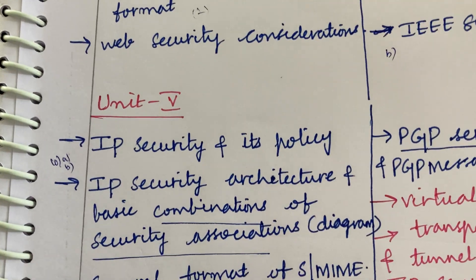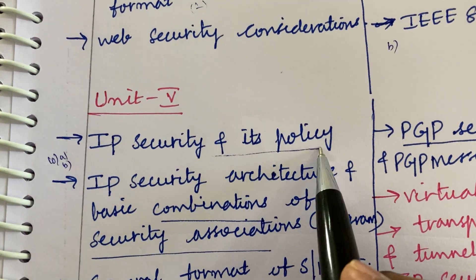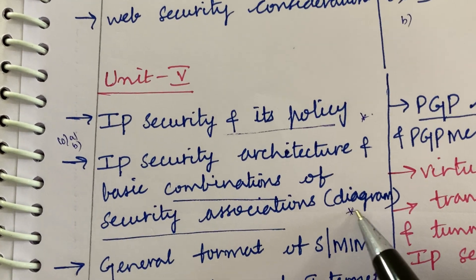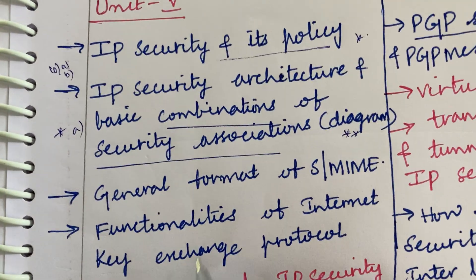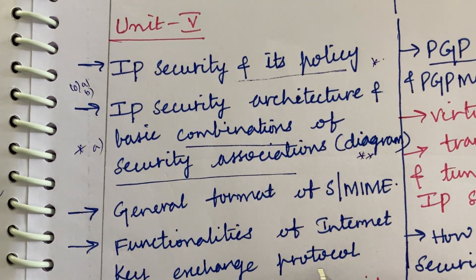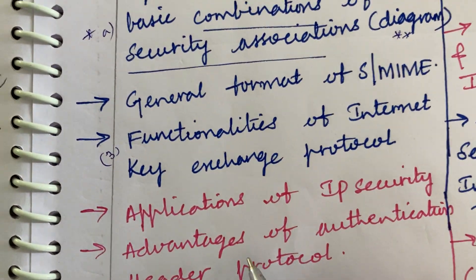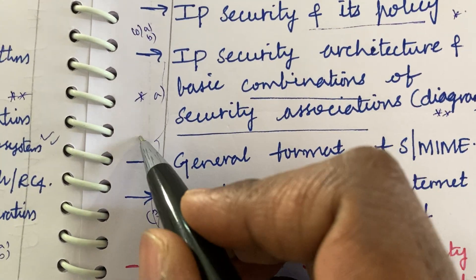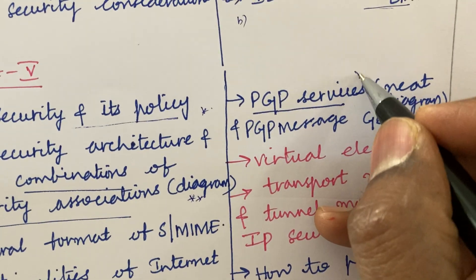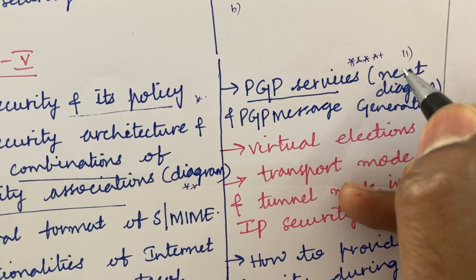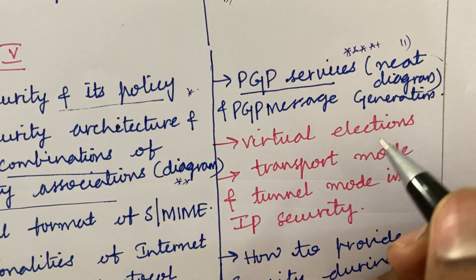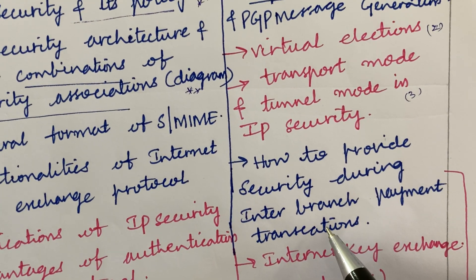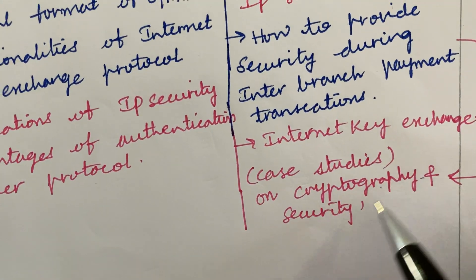Unit 5 covers 10A, 10B, 11A, and 11B. IP security and its policies explained in detail is said to be very important. IP security architecture and basic combinations of security associations along with a diagram may be a 10A question. The general format of S/MIME and the functionalities of the Internet Key Exchange protocol are said to be 3-mark questions. The applications of IP security is a 2-mark question. The advantages of the Authentication Header protocol may be a short question. PGP services is one of the top questions in question 11 — PGP message generation with a neat diagram. Transport mode and tunnel mode in IP security may be a 3-mark question. How to provide security during interbranch payment transactions may be a case study on cryptography security asked in 11B.